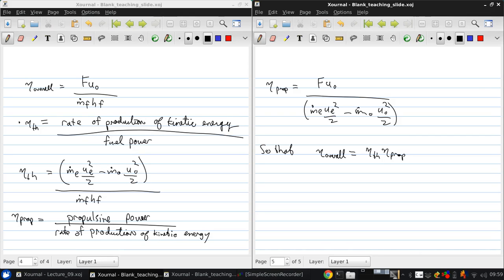So this thermal efficiency is no different than what you've seen in thermodynamics for the ideal Brayton cycle, which is W net over Q in equals 1 minus T1 over T2, where T1 is the compressor inlet temperature and T2 is the compressor outlet temperature.